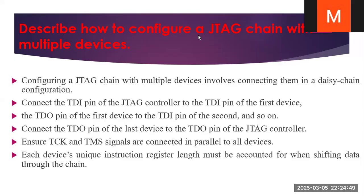Describe how to configure a JTAG chain with multiple devices. Configuring the JTAG chain with multiple devices involves connecting them in a daisy chain configuration, that means cascading. Connect the TDI input of the JTAG controller to the TDI input of the first device. The TDO pin of the first device is connected to the TDI pin of the second device, and so on, like a chain pattern — the output of one device is connected to the input of the other device.